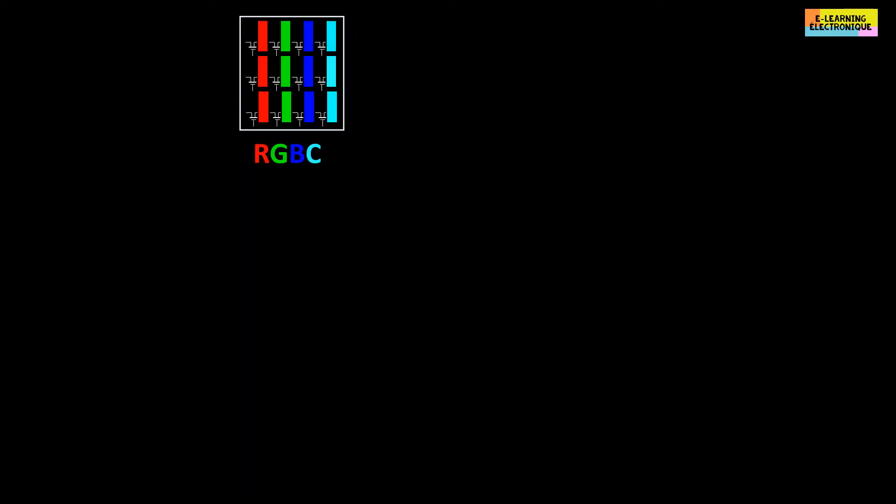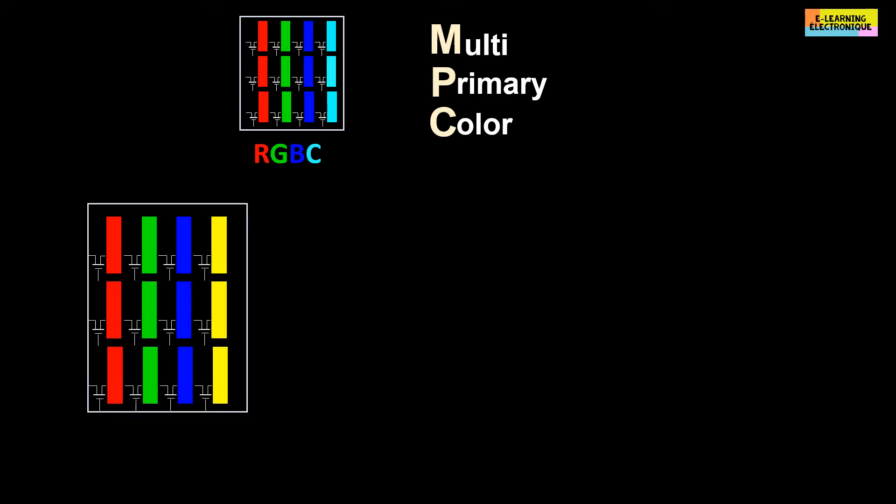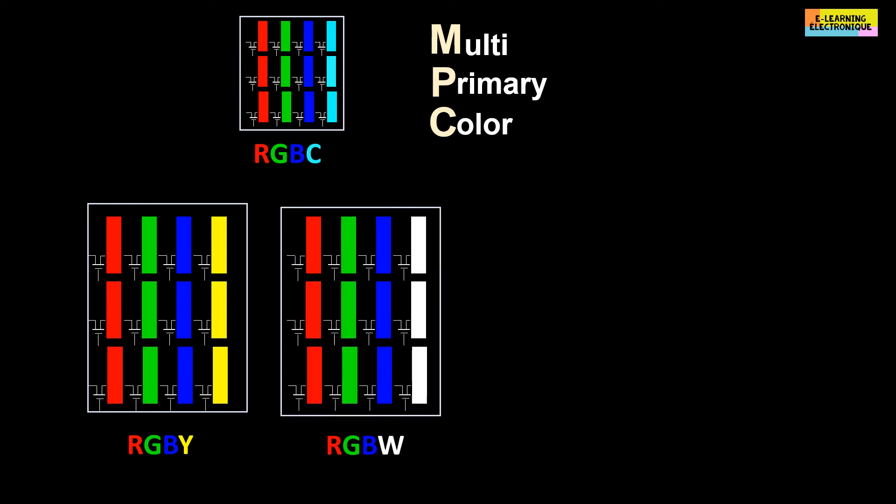Some screens have pixels composed of more than three primary colors. They are called in abbreviation MPC, which means multi-primary color. As a combination of colors, we can find for a pixel four sub-pixels of red, green, blue and yellow, or red, green, blue and white.